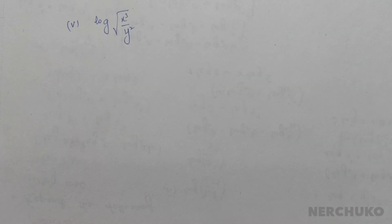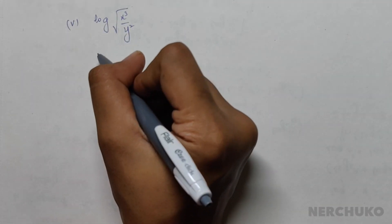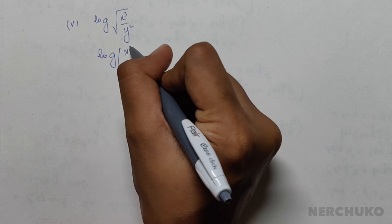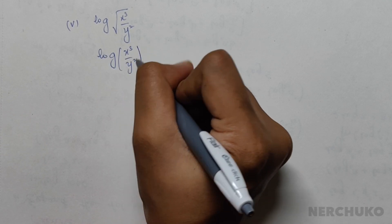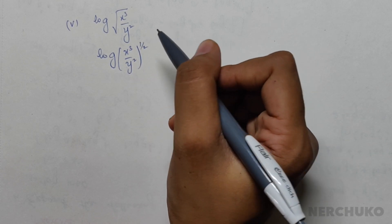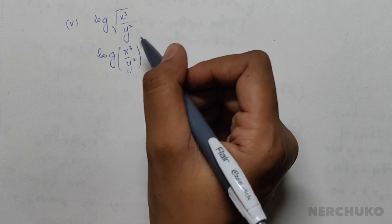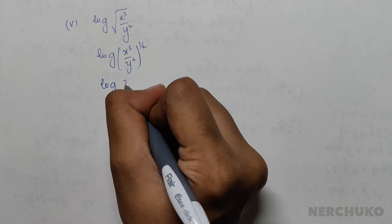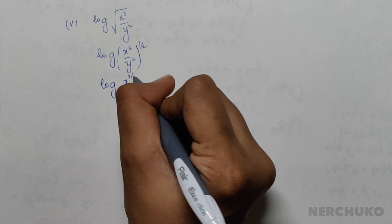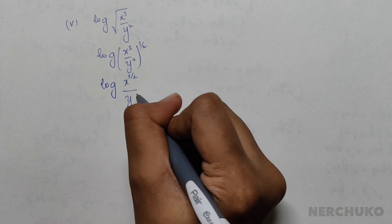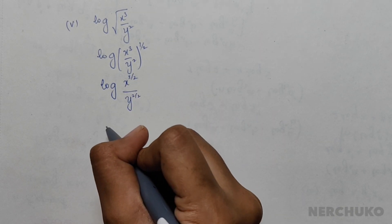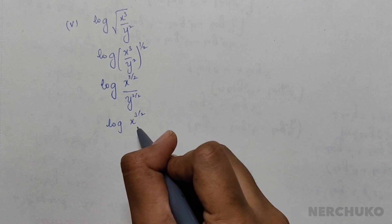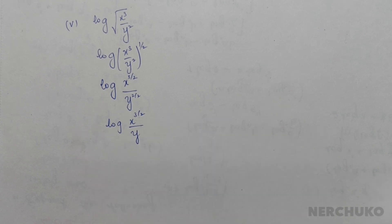For the fifth bit, I have log of the square root of (x³/y²). Square root means it is log of (x³/y²) to the power of 1/2. Applying the exponent to the numbers inside, I would have log of x to the power of 3/2 divided by y to the power of 2/2.